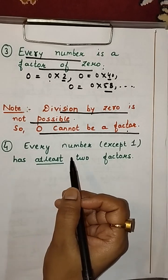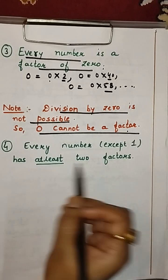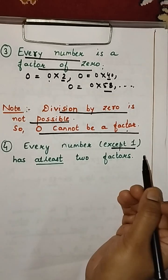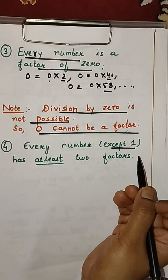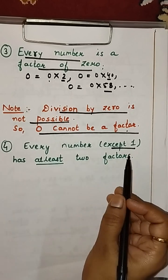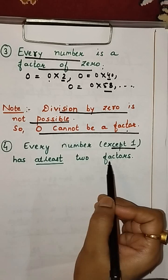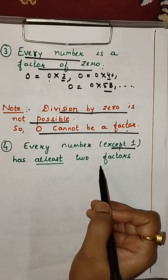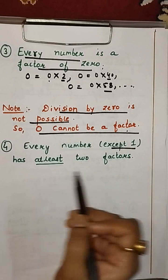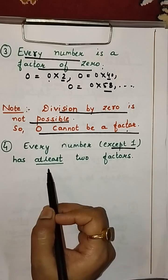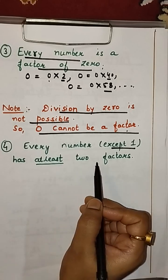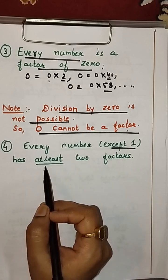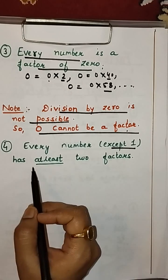Next property: every number except 1 has at least 2 factors. This is because 1 has only one factor — itself. For every other number, we know from property 1 that both 1 and the number itself are factors, giving at least 2 factors. At least means 2 or more than 2.